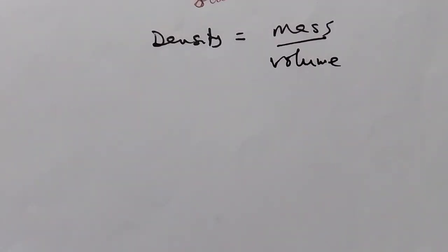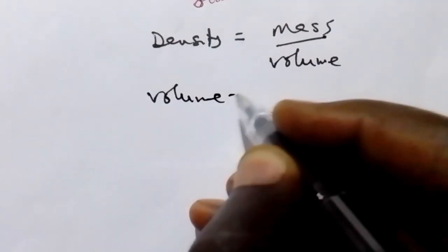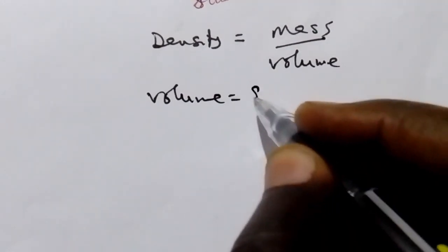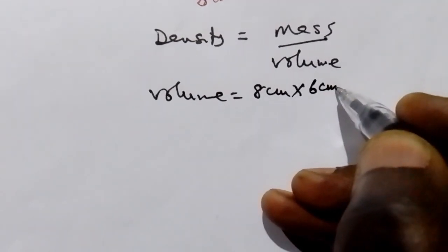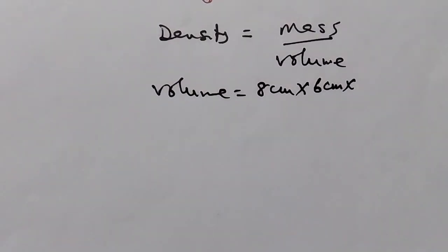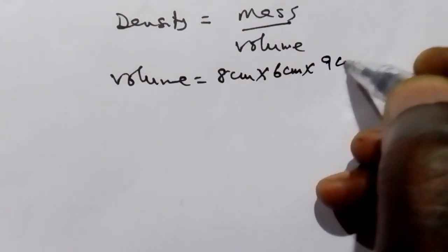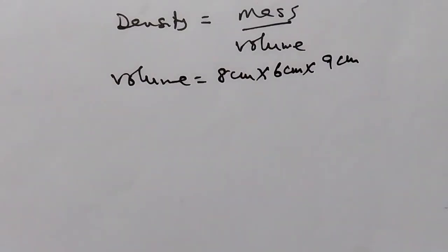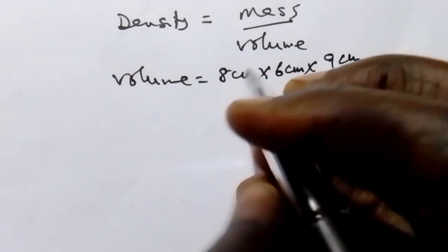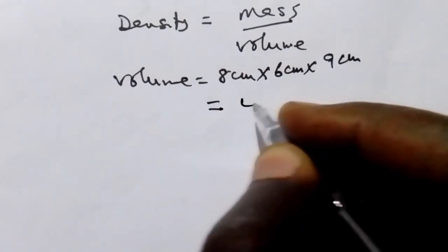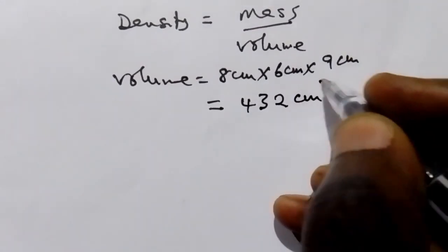Now our volume here is 8 cm by 6 cm by 9 cm. So that is our volume. And when we calculate it, we are going to find 432 cm cubed.